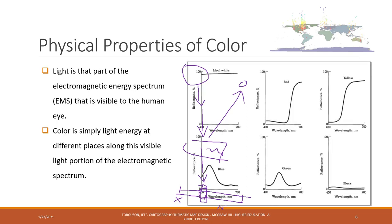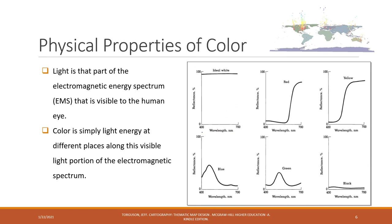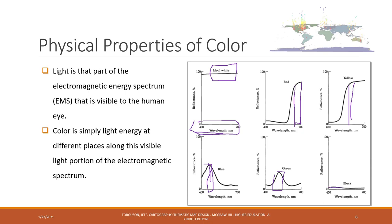If an object reflects the visible part of the wavelength equally across all wavelengths with high reflectivity, we see it as white. If the object reflects most energy in the red band, we see it as red; in yellow, we see yellow; similarly for blue and green. If the object has low reflectivity across all visible wavelengths, we see it as black.